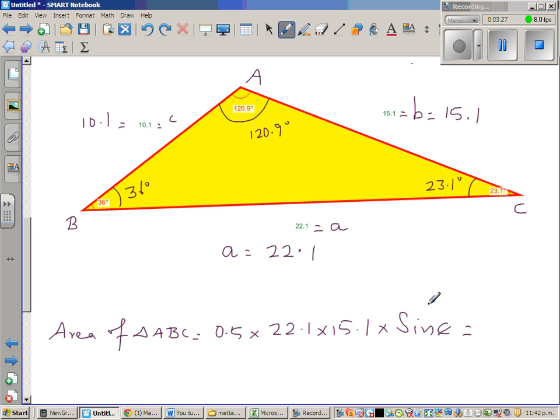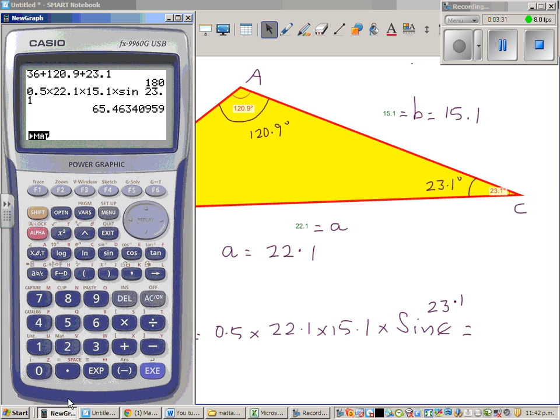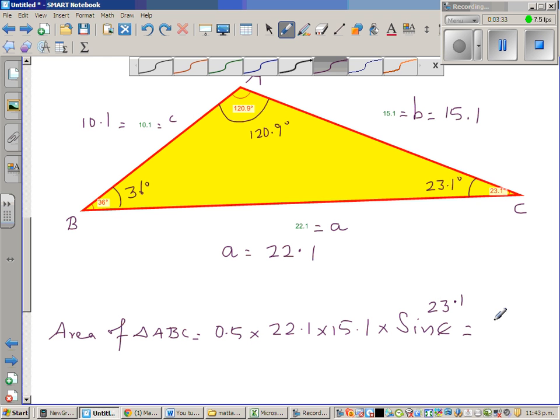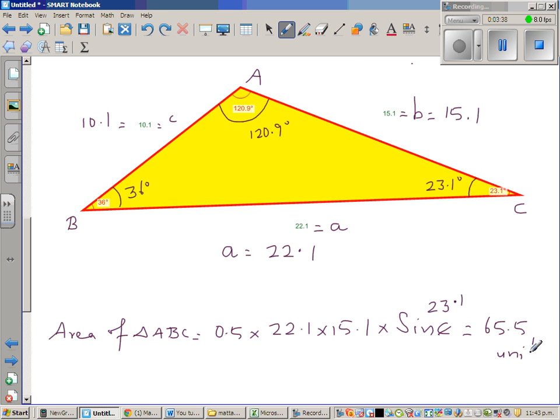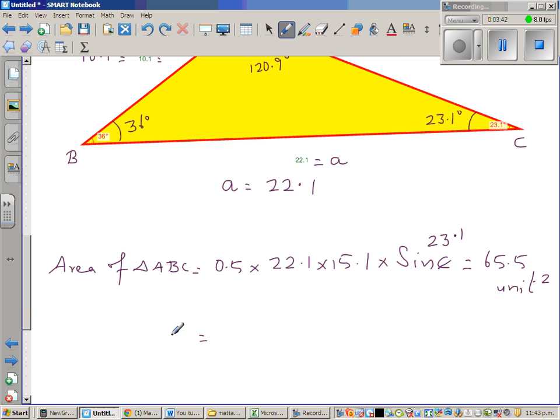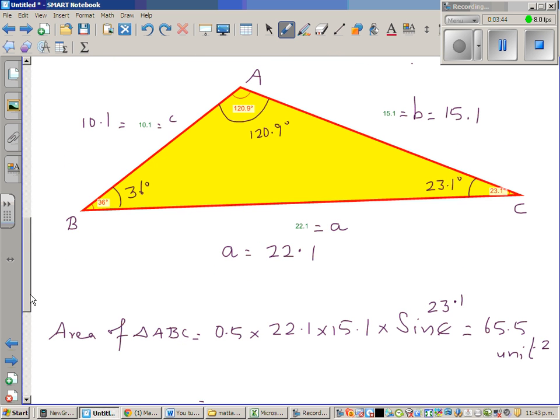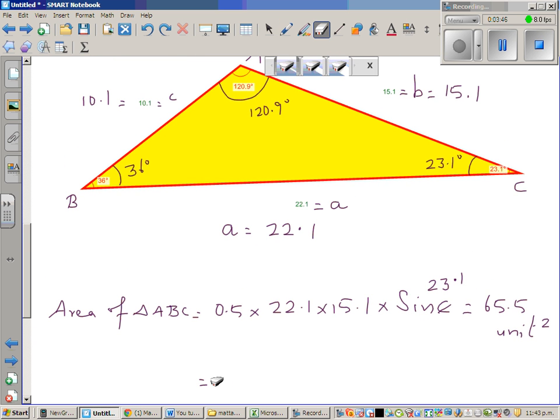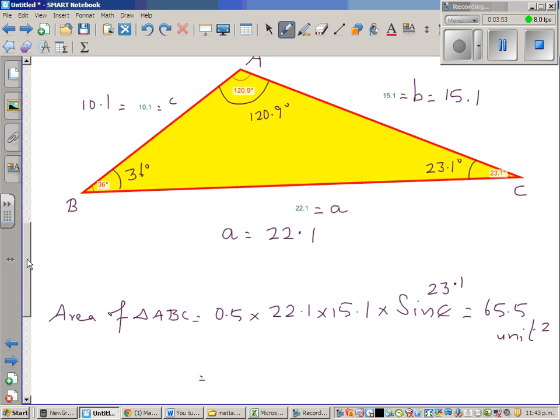So, the answer was 65.5. This is 65.5 units squared. I don't know the unit. What happens if it is a, let us take this too. One more. It can be slightly different because the measurements are not exact. Let us take, we took this A and B. So, let us take B and C.